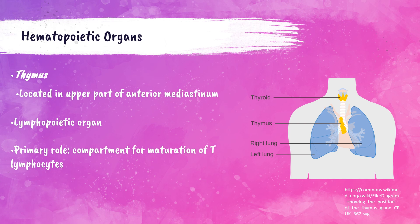The thymus is a small gland in the lymphatic system located in the upper part of the anterior mediastinum. This lymphopoietic organ is responsible for storing T lymphocytes while they mature. T lymphocytes are a critical part of the immune system of the body.